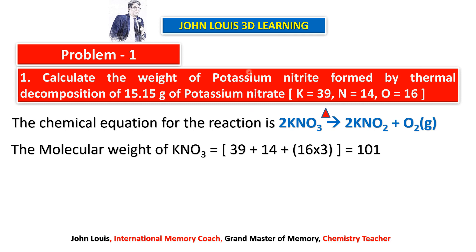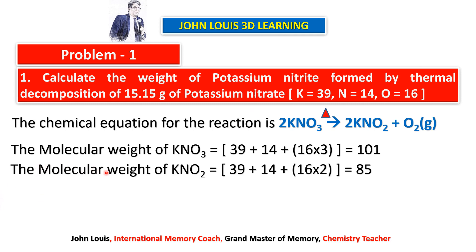We also need the molecular weight of potassium nitrite KNO₂, because we need to find how much of it is formed. The molecular weight of KNO₂ = 39 + 14 + (16 × 2) = 85. From the balanced equation, 2 × 101 grams of KNO₃ gives 2 × 85 grams of KNO₂.